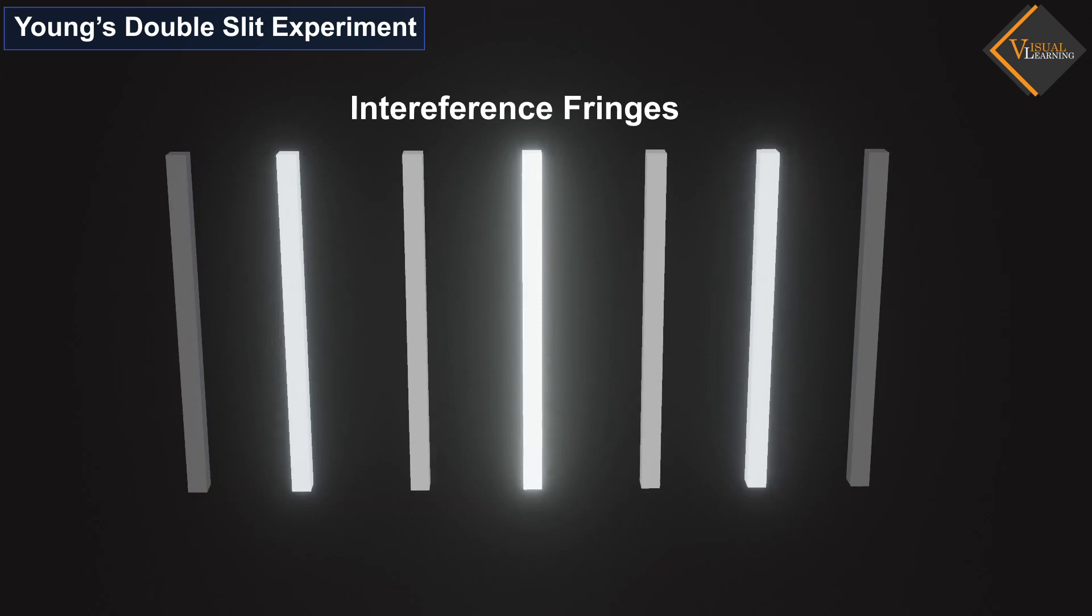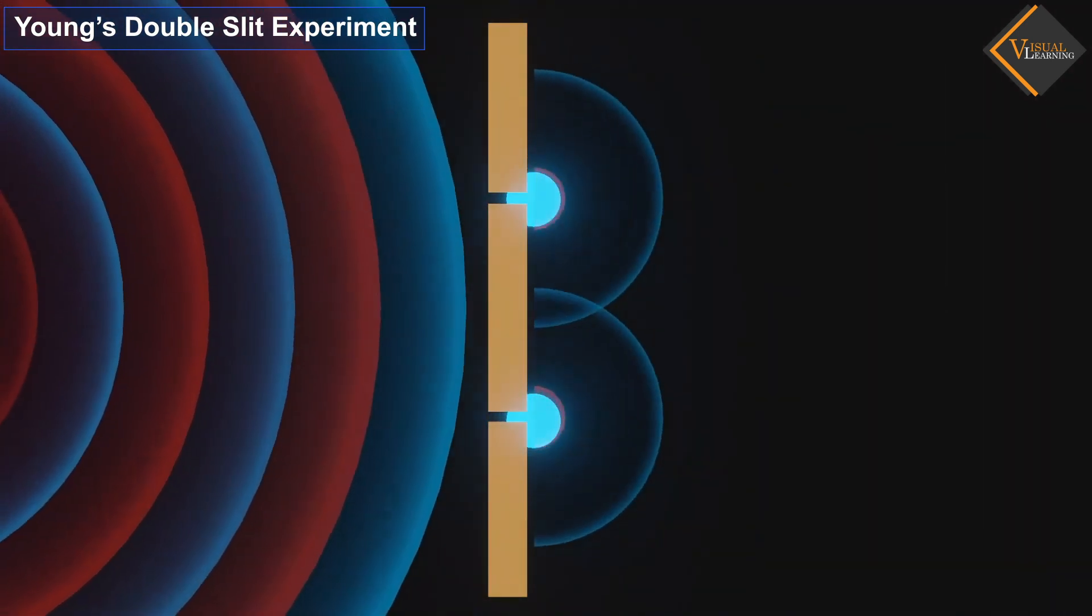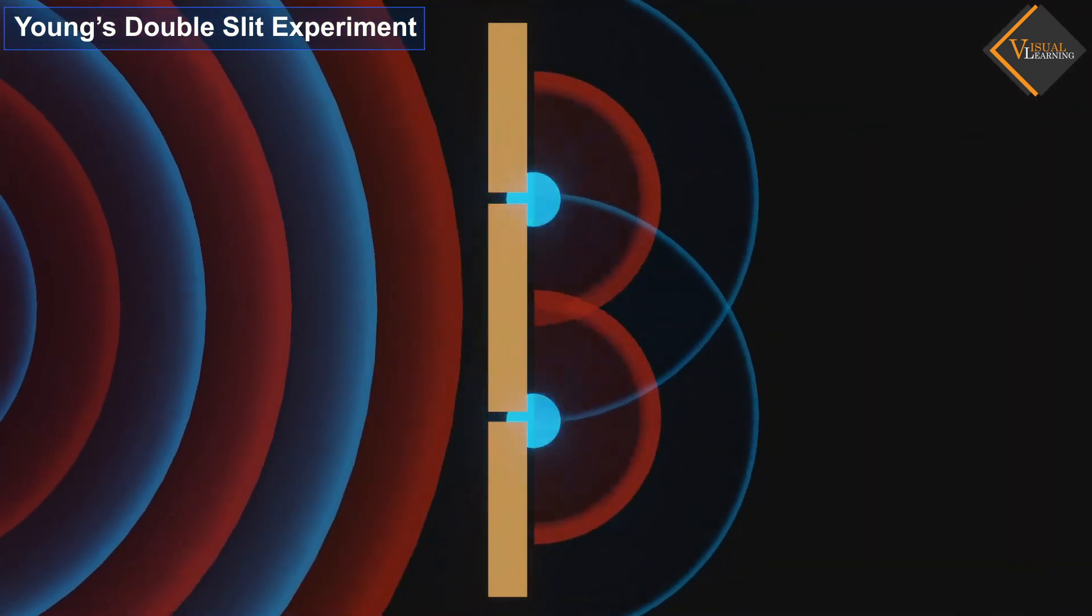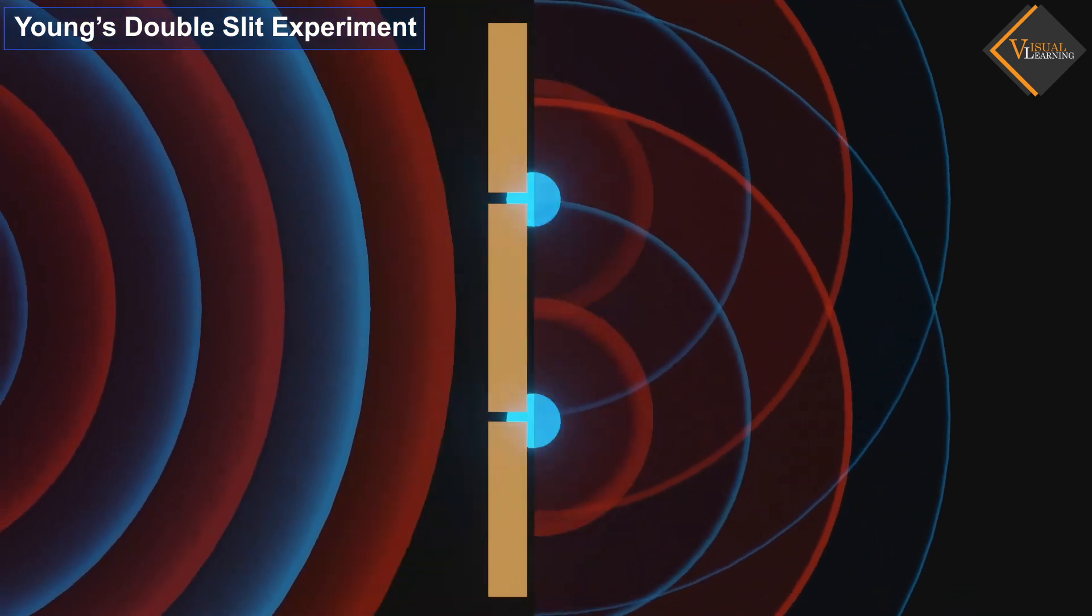Let's explore why this happens. In the animation, we observe that two spherical waves are emitted from both sources, each having a crest and a trough.